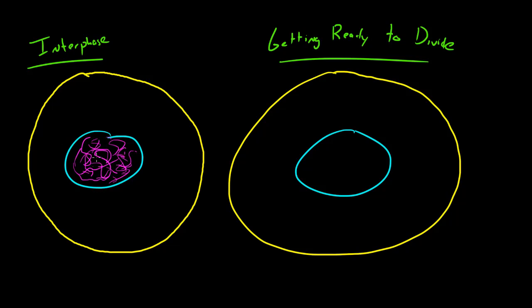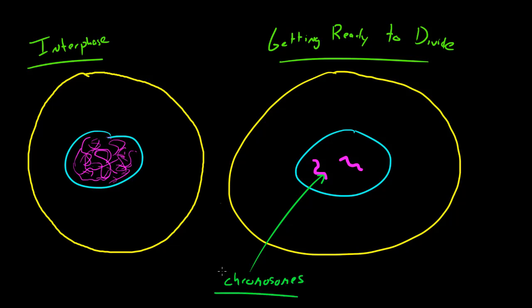The reason your DNA is spread out during interphase is because in order for DNA to work quickly and efficiently it's better if it has more surface area. However, whenever the cell is getting ready to divide, it's easier to divide the DNA if it's packed up into tight little packages. So instead of being spread out like in interphase, when your cell is getting ready to divide it condenses its DNA — and these things right here are called chromosomes. A quick definition: a chromosome is packed-up DNA.